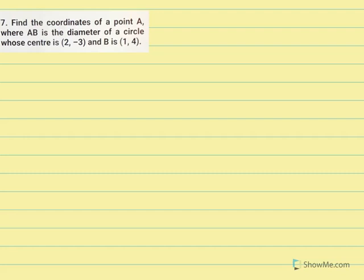Find the coordinates of point A where AB is the diameter of a circle whose center is (2, -3) and B is (1, 4).